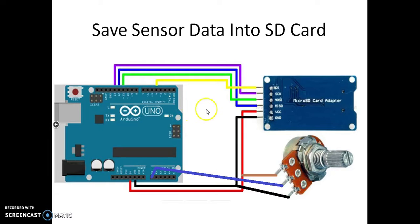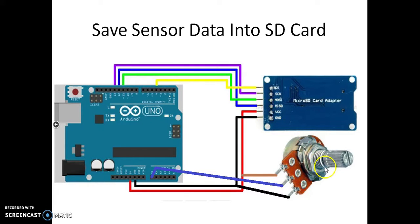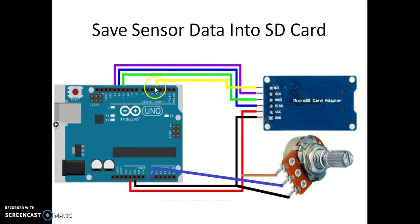Today I will show you another example: how you can store your sensor data into an SD card module. Let's start. This is our circuit — here Arduino is the master and the SD card module works as slave. A potentiometer will work as our sensor, but you can add any sensor here.